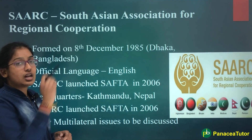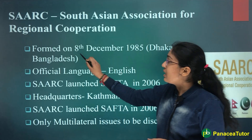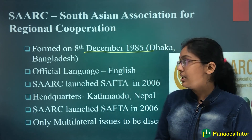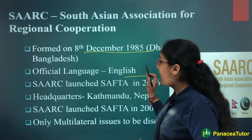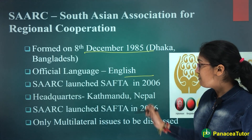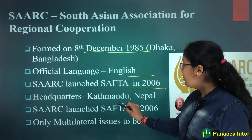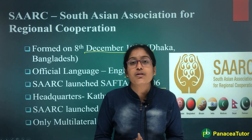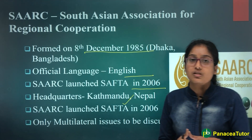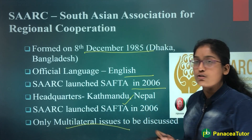Next International Organization hai SAARC — South Asian Association for Regional Cooperation — jisko ki form kiya gaya tha 8th December 1985, Dhaka, Bangladesh mein. Iski official language hai English. SAARC ne launch kiya tha SAFTA in the year 2006, aur iske headquarters hain Kathmandu, Nepal mein. Isme hum sirf aur sirf multilateral issues ko discuss karte hain.